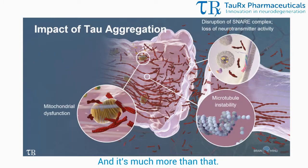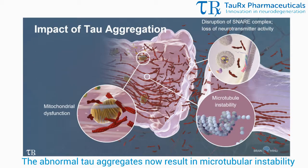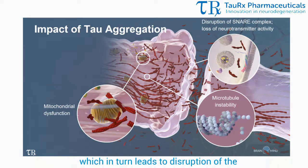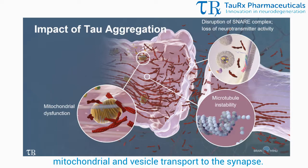And it's much more than that. The abnormal tau aggregates now result in microtubular instability, which in turn leads to disruption of the mitochondrial and vesicle transport to the synapse.